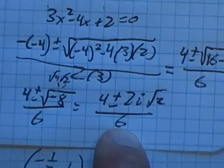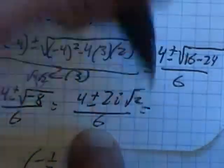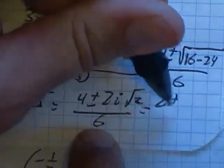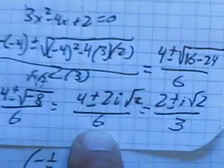All these are divisible by 2. So if I simplify it a little bit, this is going to be 2 plus or minus i root 2 over 3.